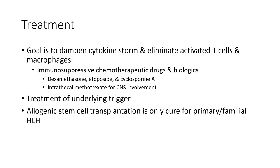Treatment goals are to dampen the cytokine storm and eliminate activated T cells and macrophages using immunosuppressive chemotherapeutic drugs and biologics including dexamethasone, etoposide, and cyclosporine A. Intrathecal methotrexate is used for CNS involvement. Treatment of the underlying trigger is essential. Allogenic stem cell transplantation is the only cure for primary familial HLH.